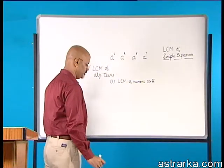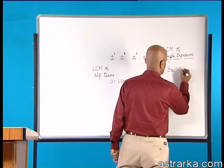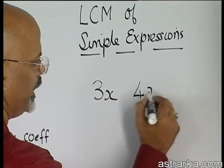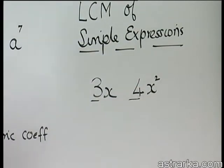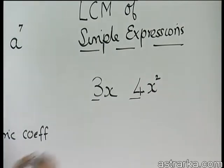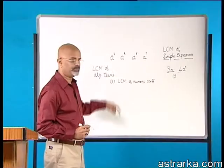So, if you had 3x and 4x square, the LCM of the numeric coefficient is 12. That is what this statement means.